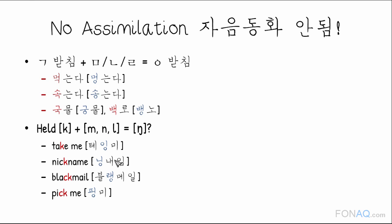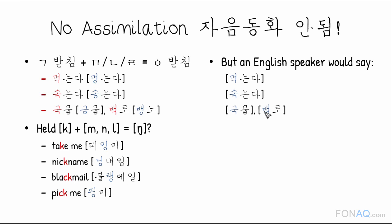And yet, a lot of us bring this rule to English and say things like 'take me,' 'nickname,' 'blackmail,' 'pick me' with ㄱ assimilation. You don't want to do this. In English, there is no k-consonant assimilation.